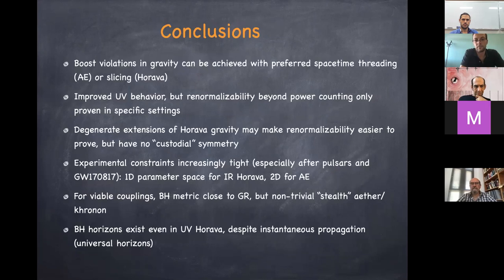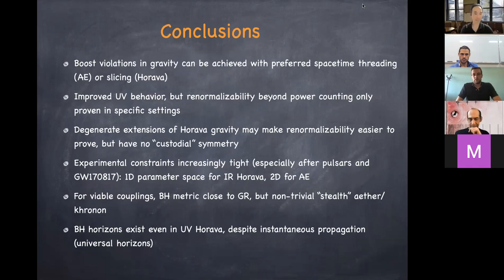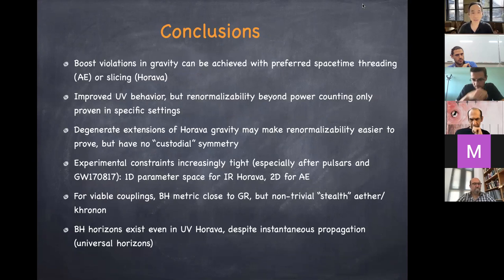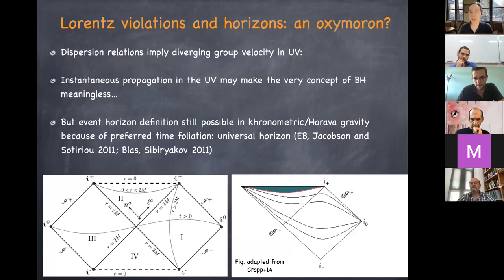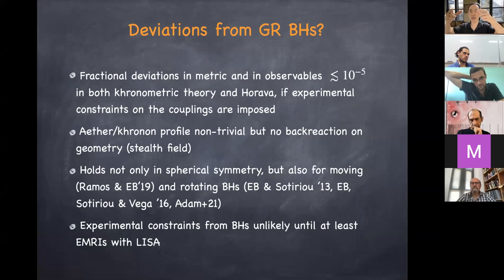We have many questions but time only for one. Shinji asks: do you think the universal horizon can form dynamically? We do see it form dynamically. It seems to involve topology changes because before formation the constant-time surfaces have no hole, but after formation there's a region inside not covered by the constant-time surface. How is this possible?